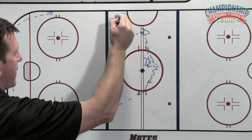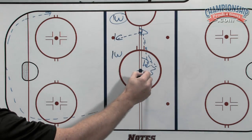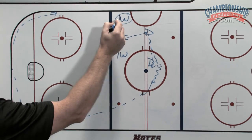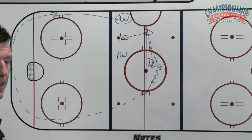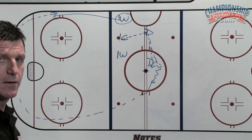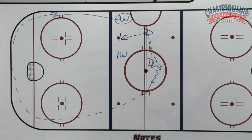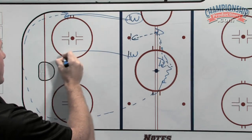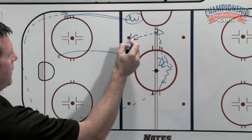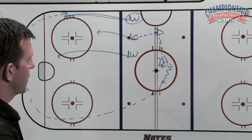Our strong side or board side wing knows this play is set up and anticipates the hard rim. He's the first guy on the puck — in some cases he might get there before the defenseman on the opposing team. If he gets there first, we have our inside wing looking to drive through, and our center would then in all likelihood support high in the zone.